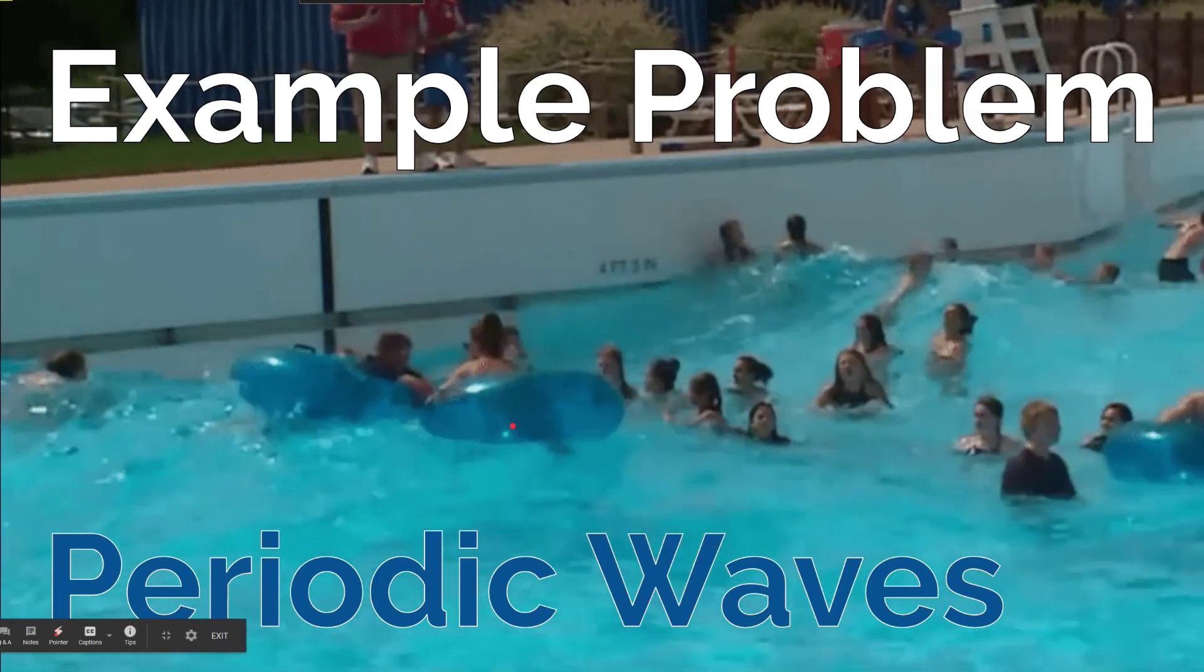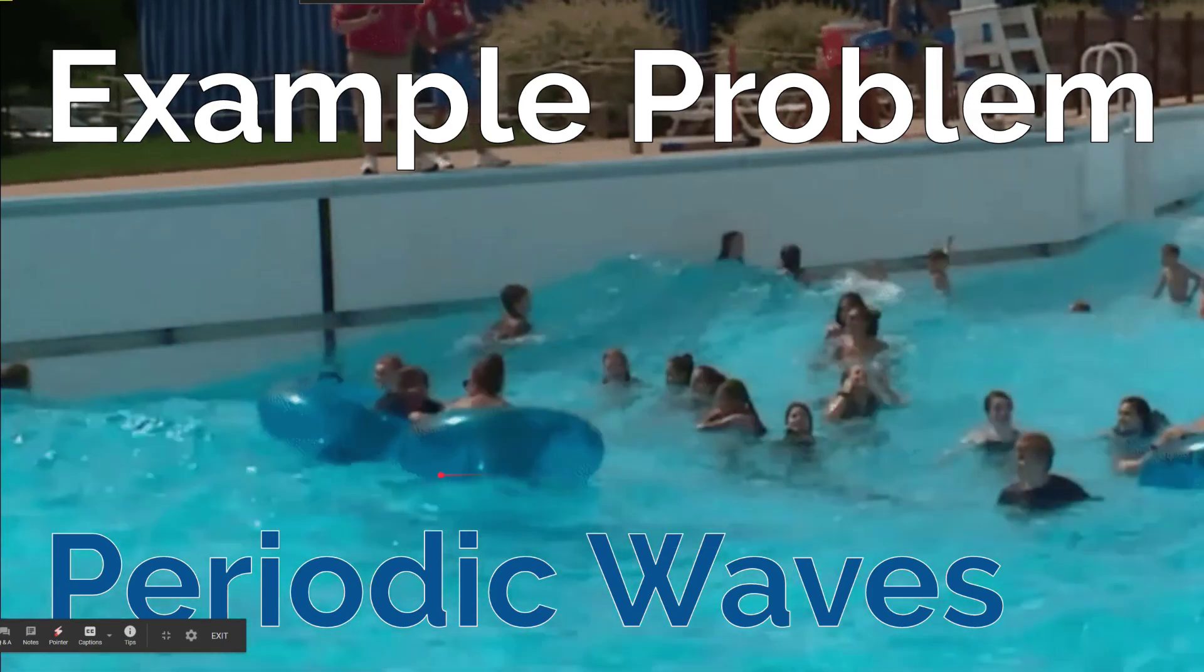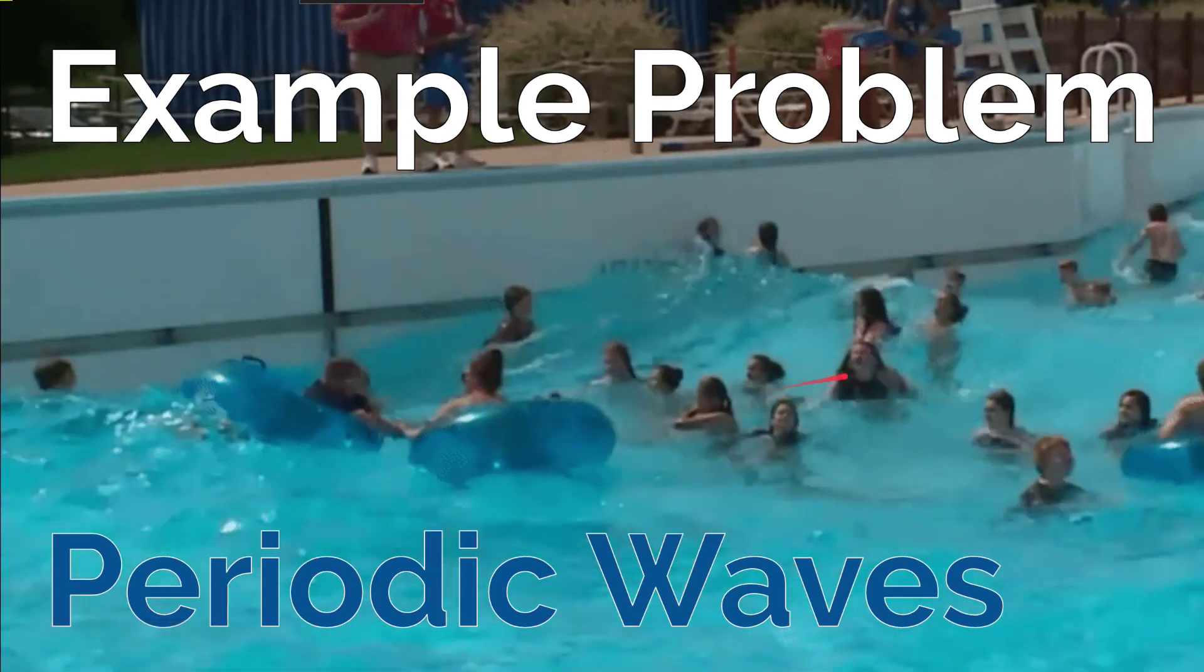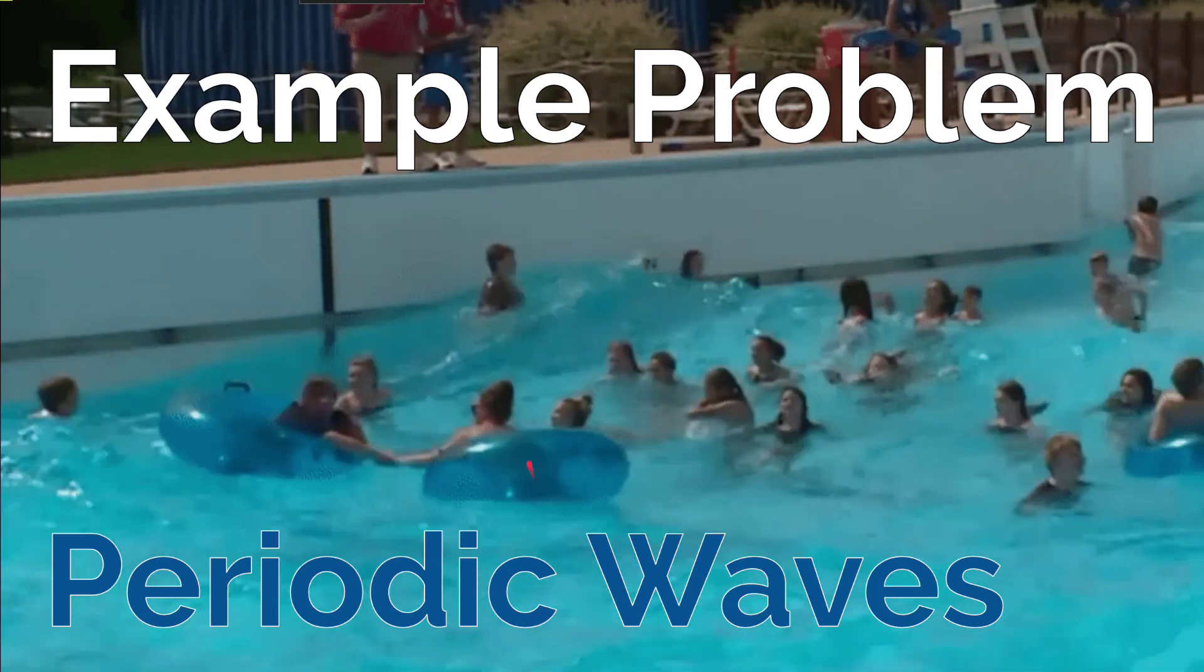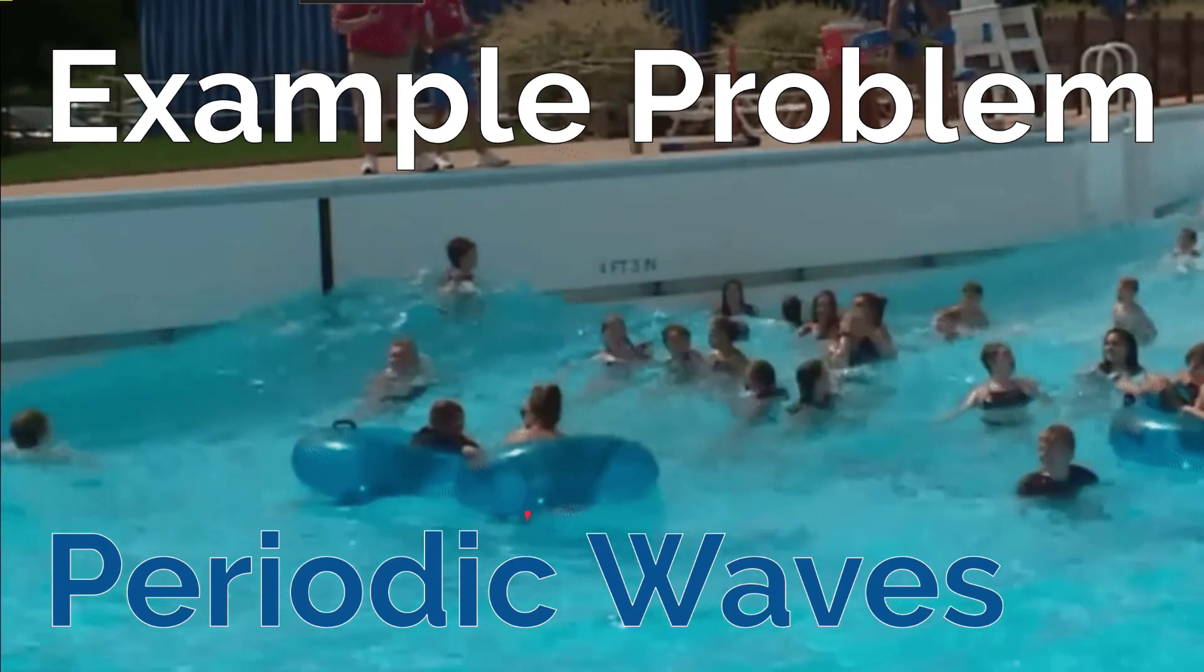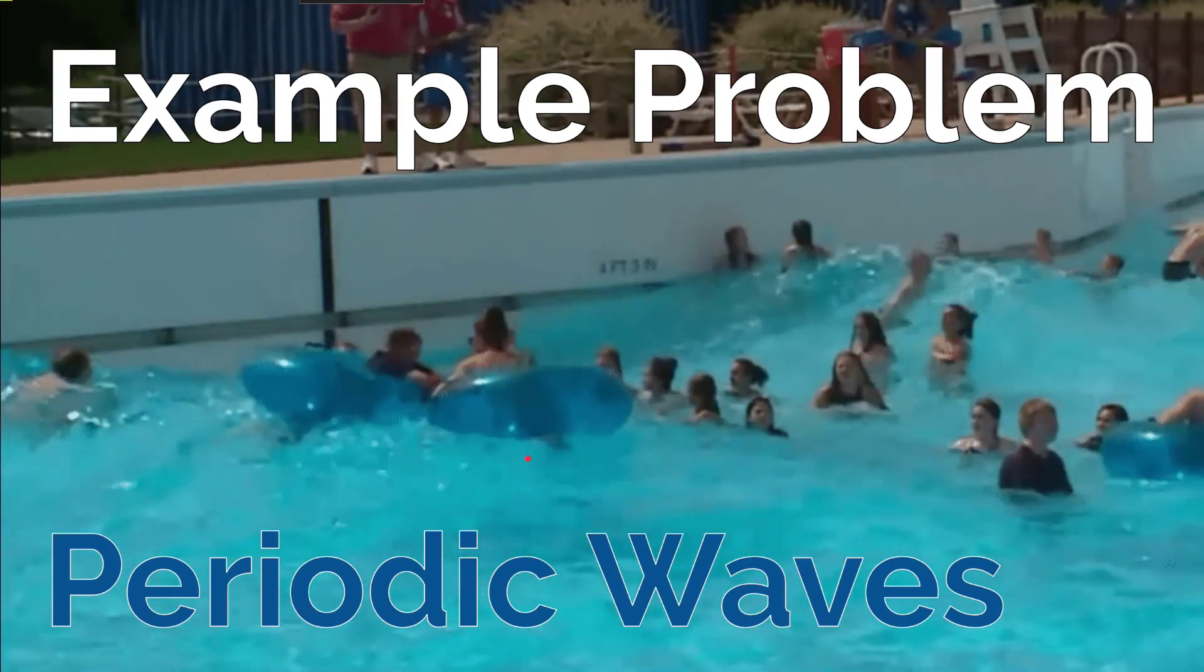We're going to focus on a student floating in an inner tube. You can see that the waves are moving from left to right, from the deep end to the shallow end, but the person in the inner tube is just bobbing up and down. This is an example of a transverse mechanical wave.